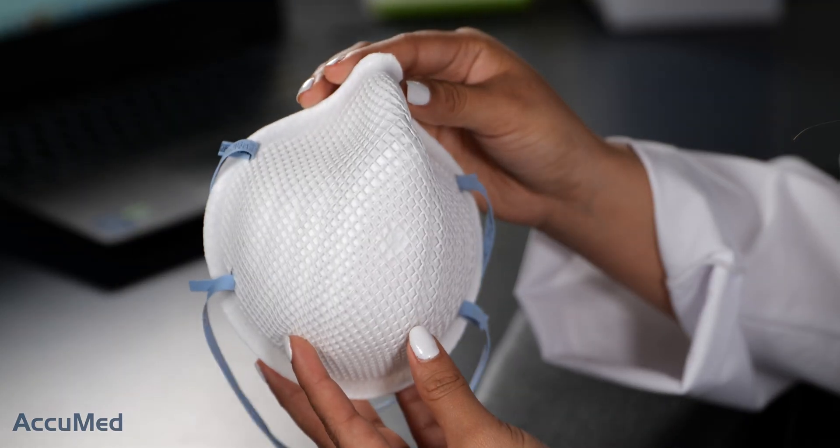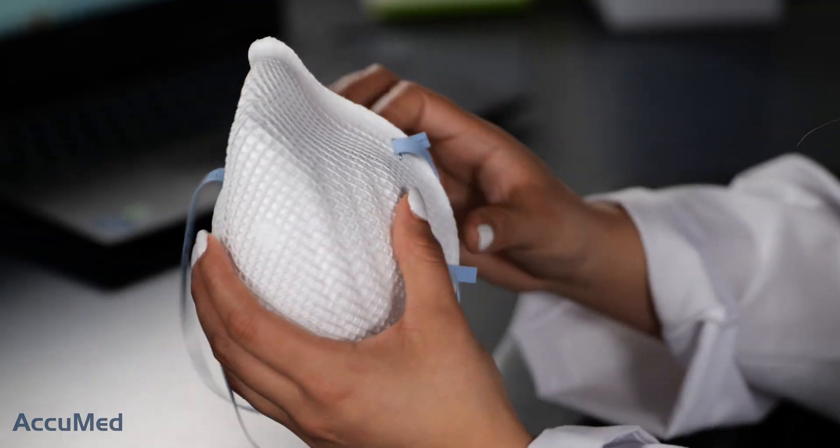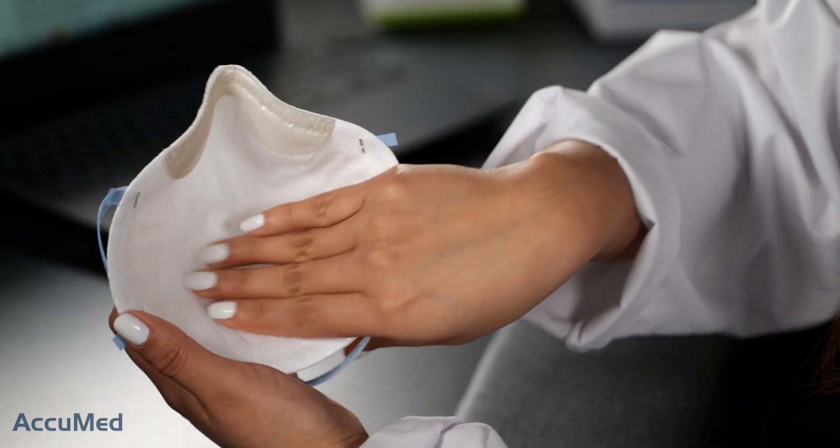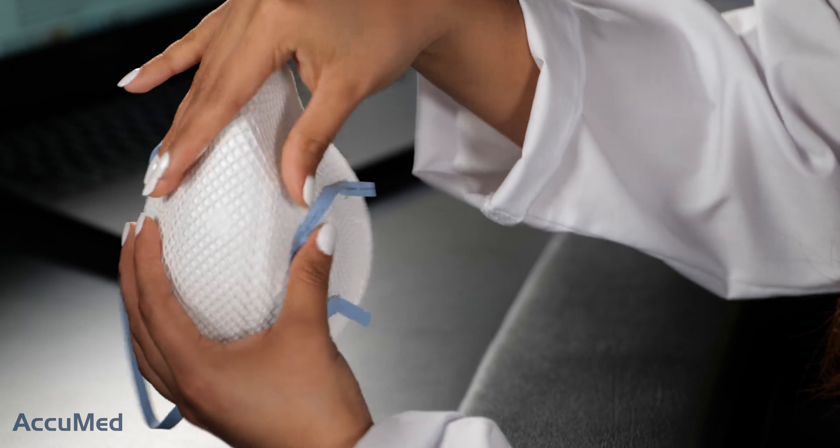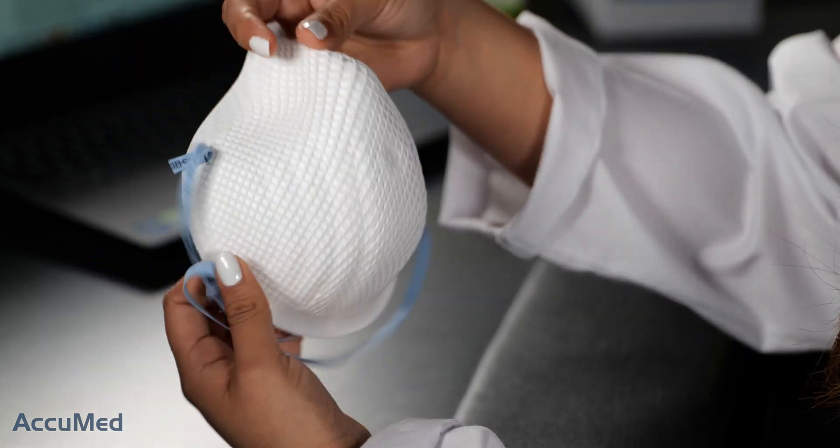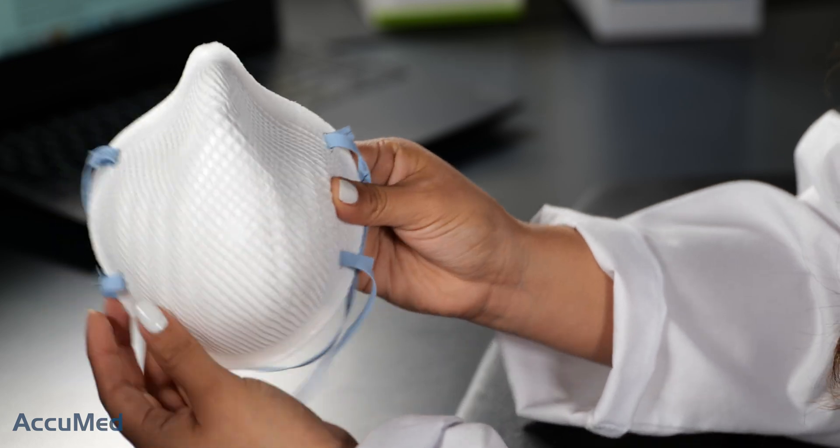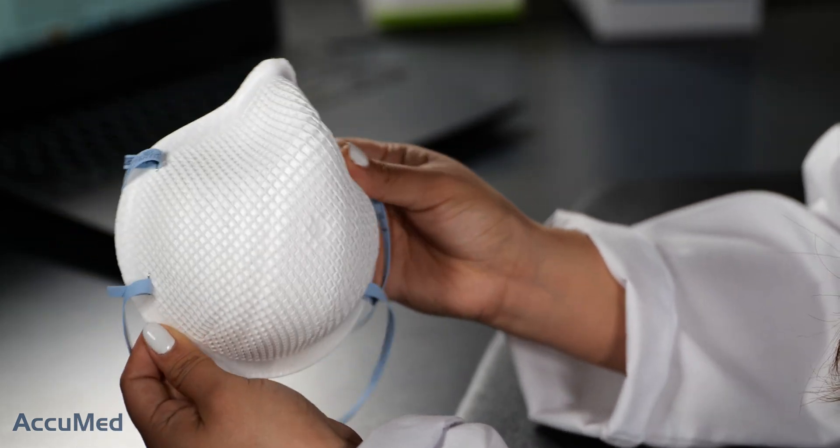This is how the N95 respirator looks. It is a mesh design. This is how it looks from the inside. It is a pretty soft material from the inside. The quality of this is actually a pretty high construction quality. It feels more like an industrial mask design, something that you would usually wear at a chemical plant setting.